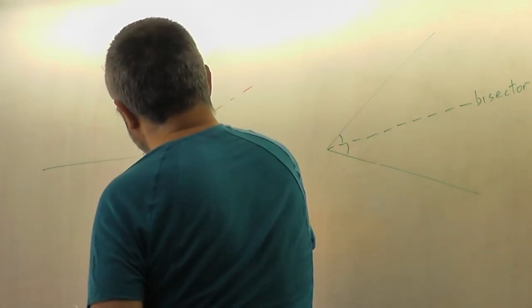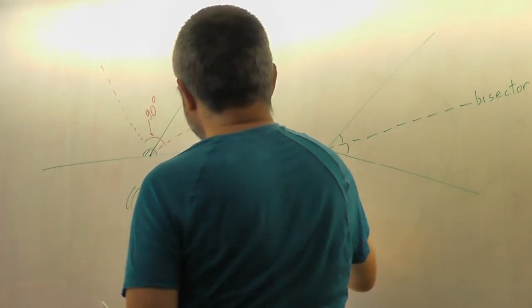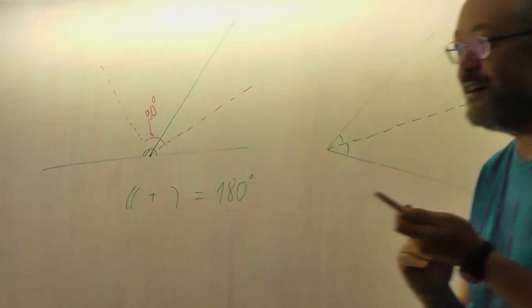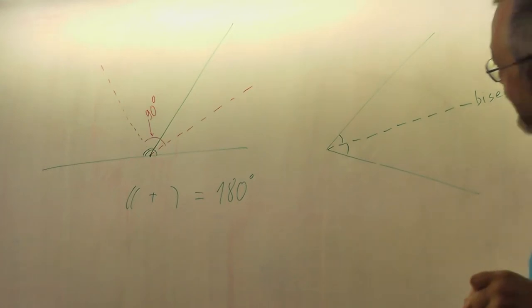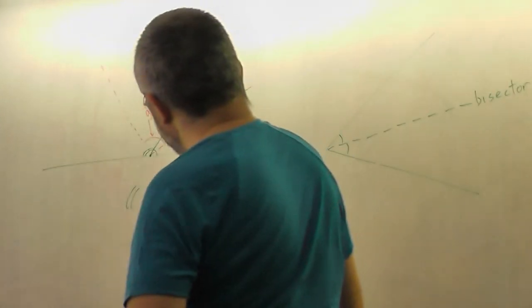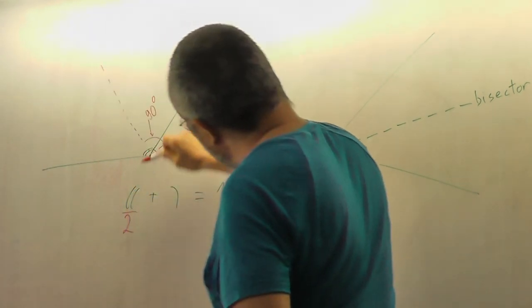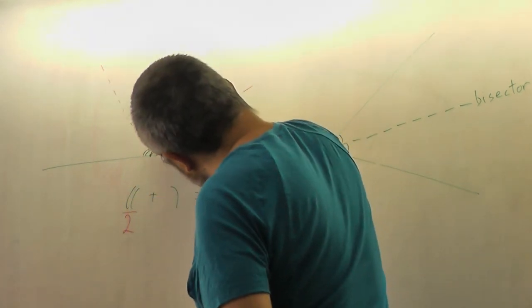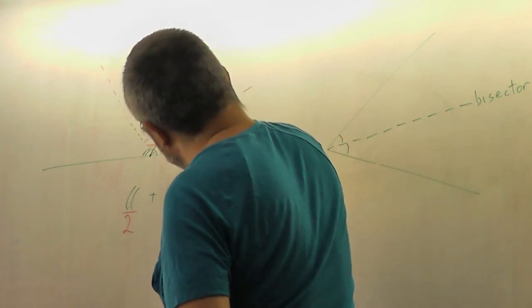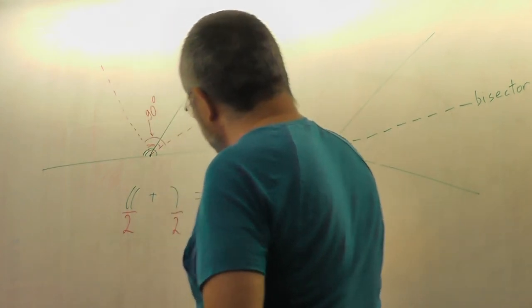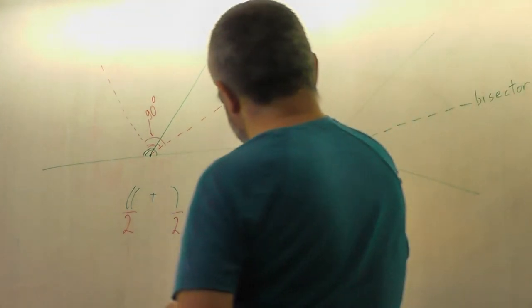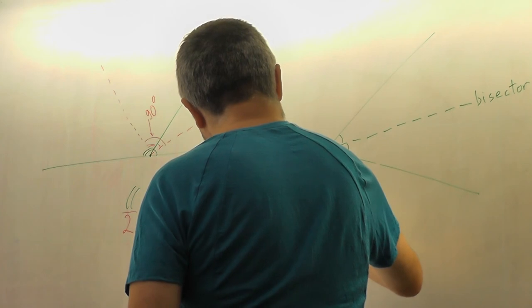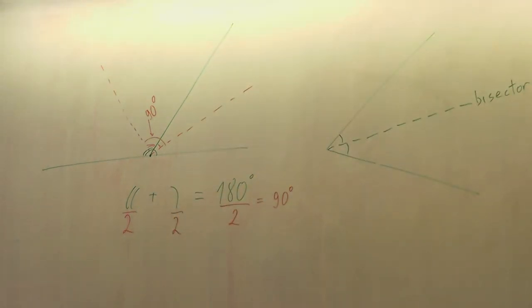This angle plus this angle is 180. So if we divide both in half and take it together, it will be half of... So if we take a half of this angle, which is this, and a half of this angle, of course it will be half of the sum. So it's 90 degrees.